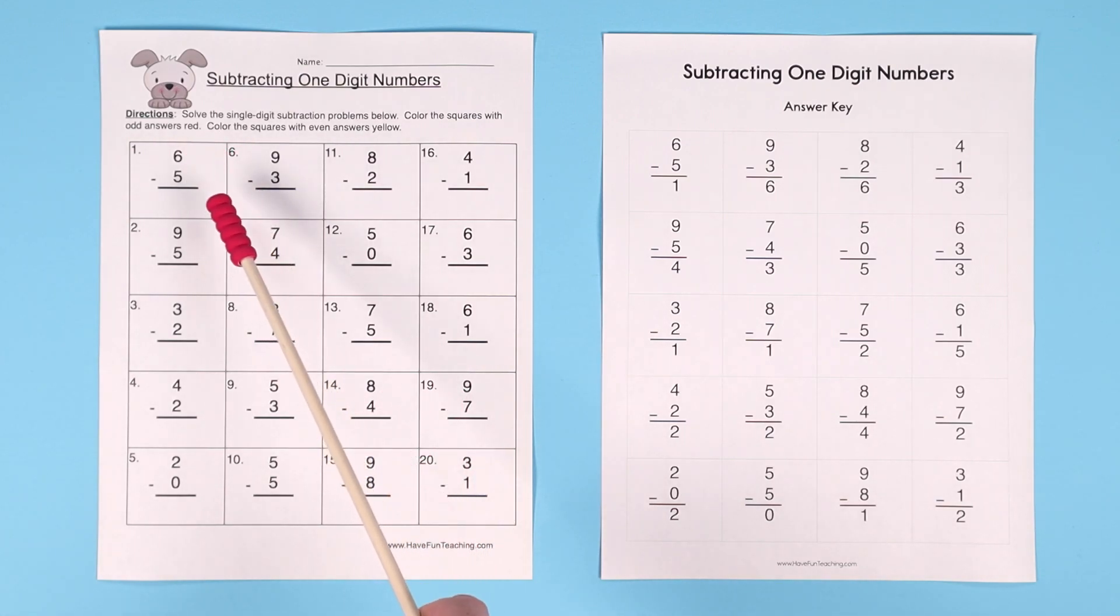For example, 6 minus 5 equals 1, 9 minus 3 equals 6, 8 minus 2 equals 6. This does include an answer key.